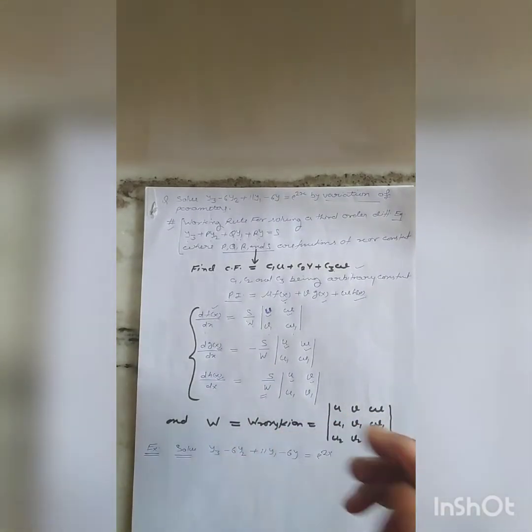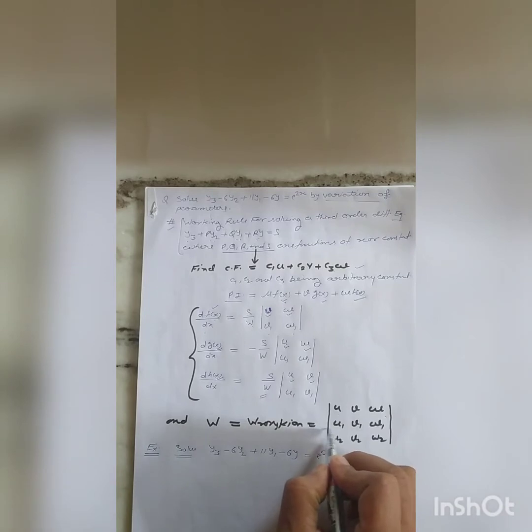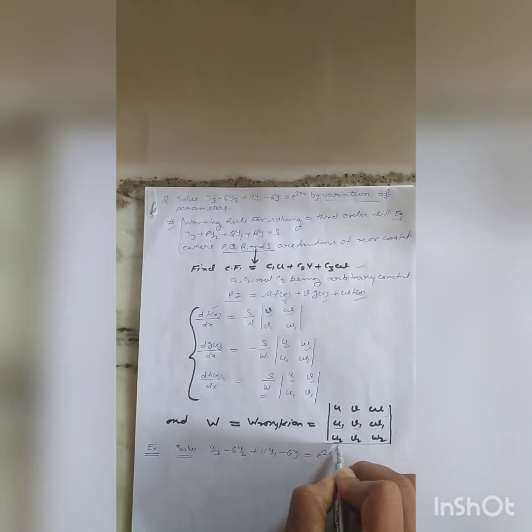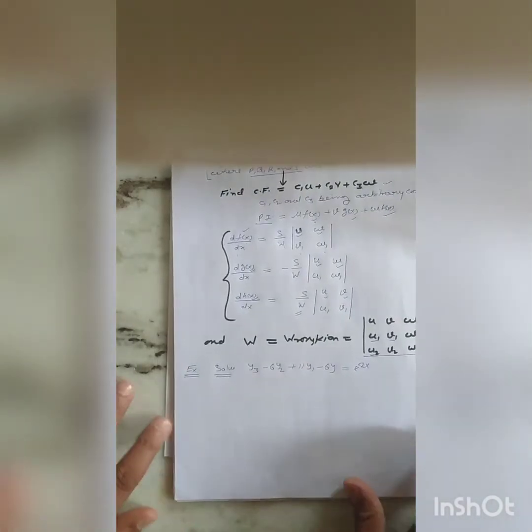The Wronskian is a 3×3 determinant with u, v, w in the first row, their first derivatives in the second row, and their second derivatives in the third row. Now let us solve an example using this method.